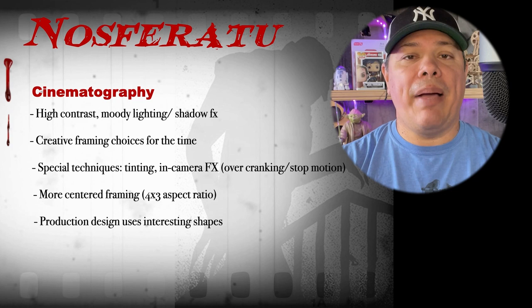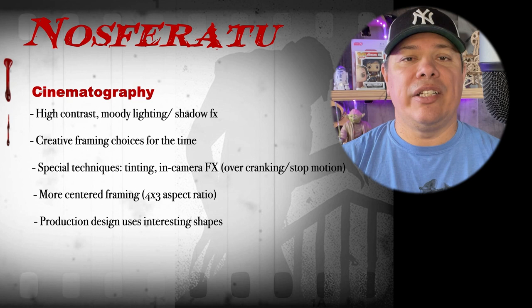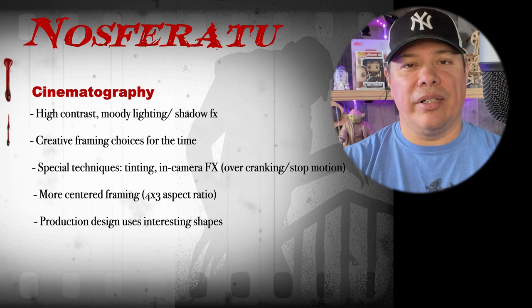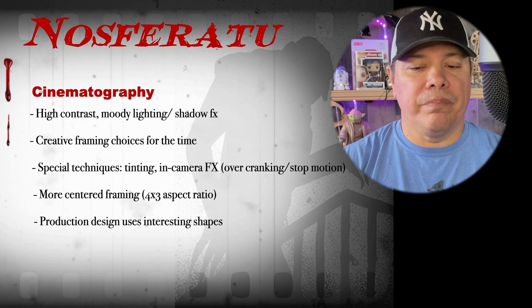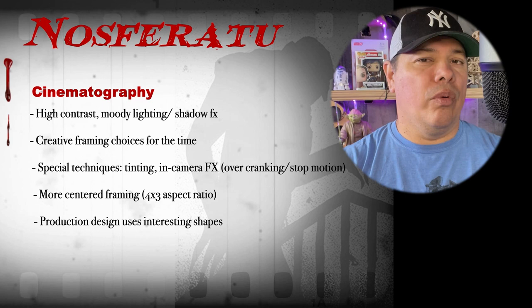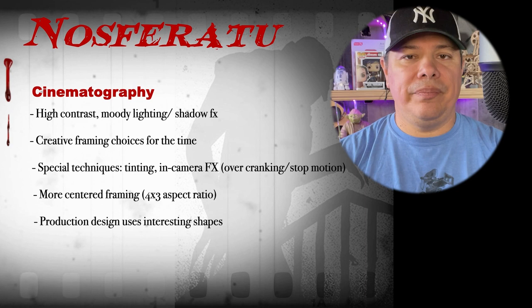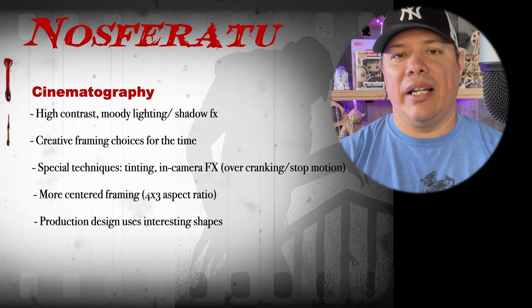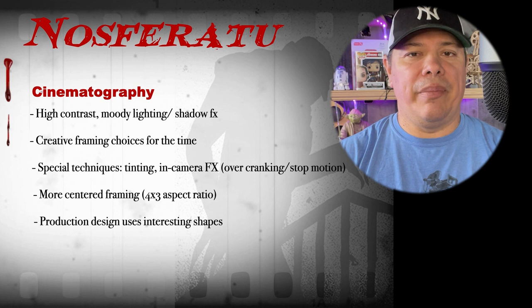They also used some stop motion techniques, which is actually shooting things frame by frame. In this particular movie, it was to make it look like things were happening without human help. One of the things you'll see that's different from more modern films is it has a 4x3 aspect ratio, which means it's pretty square. Also, they put a lot of framing with shots centered. More modern things use the edge of the frame a lot more when composing shots these days.